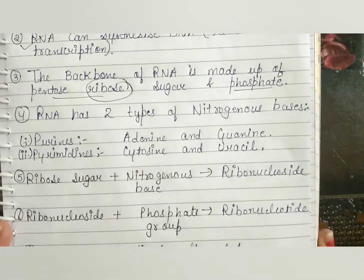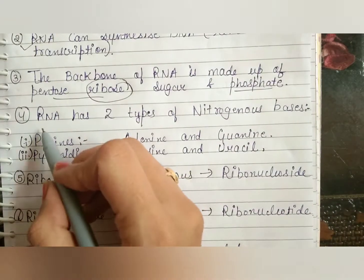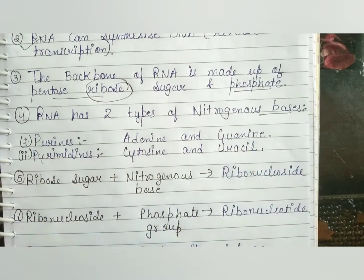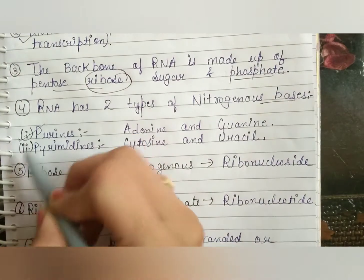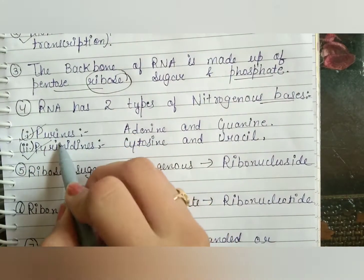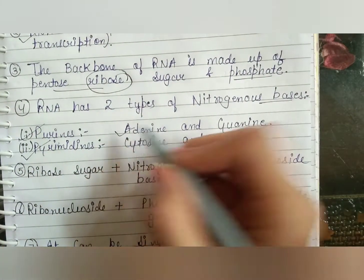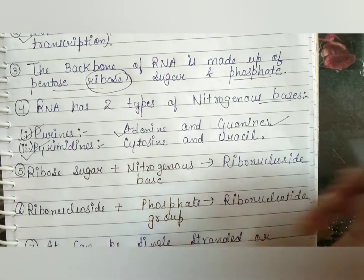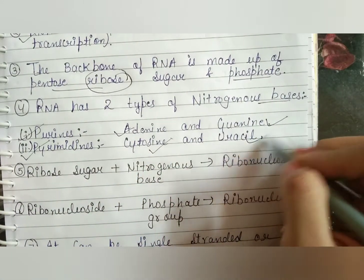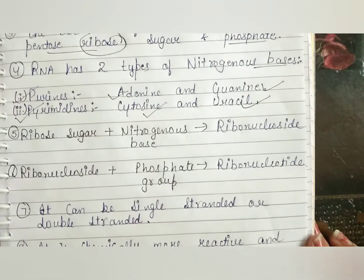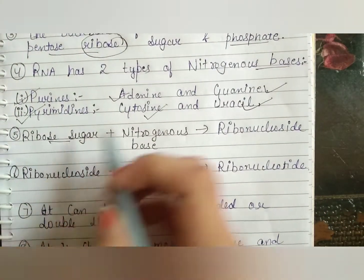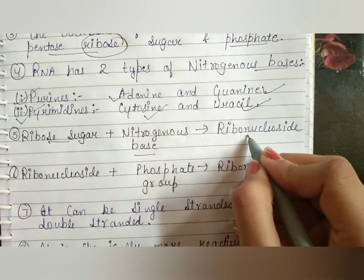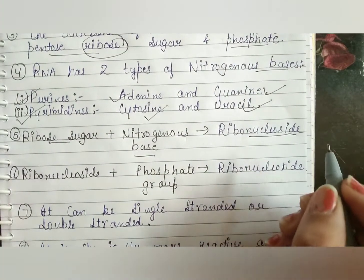RNA has two types of nitrogenous bases — purines and pyrimidines. Purines consist of adenine and guanine, and pyrimidines consist of cytosine and uracil. Ribose sugar plus a nitrogenous base forms a nucleoside.